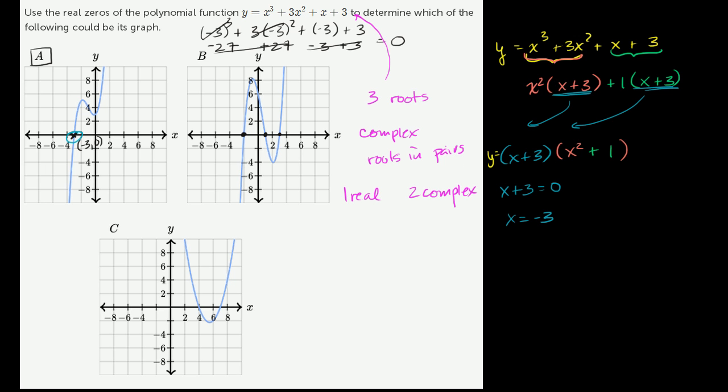When does x squared plus 1 equal 0? Well, when x squared is equal to negative 1. Well, there's no real x's, no real valued x's. There's no real number x's such that x squared is equal to negative 1. X is going to be an imaginary, or I guess I'll just say in more general terms, it's going to be complex valued. So once again, you see you're going to have a pair of complex roots. And you have one real root at x is equal to negative 3.